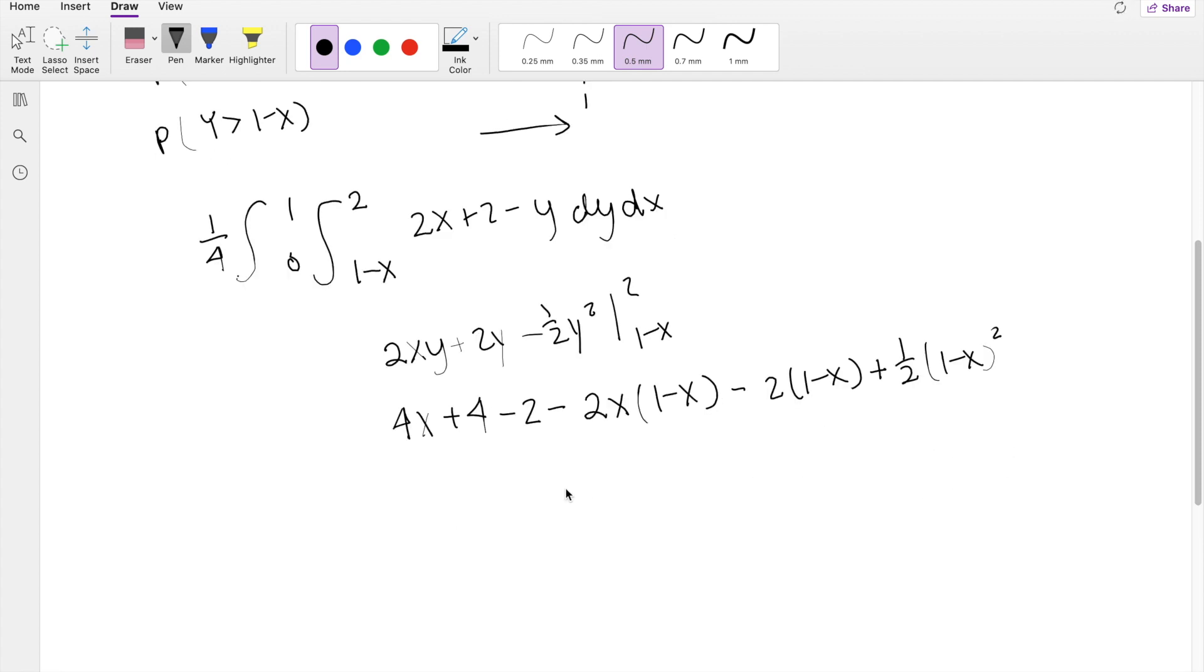Alright, so this is equal to—simplifying it further—you get 4X plus 2 minus 2X plus 2X squared minus 2 plus 2X. Plus, I'm just going to keep this here because I'm afraid of my math skills.